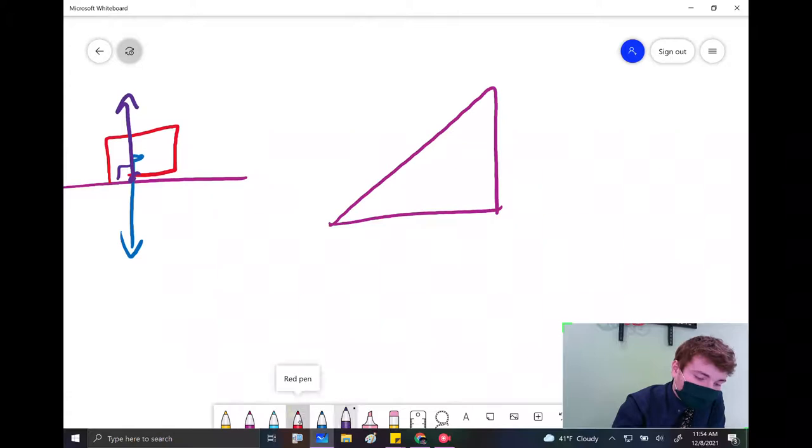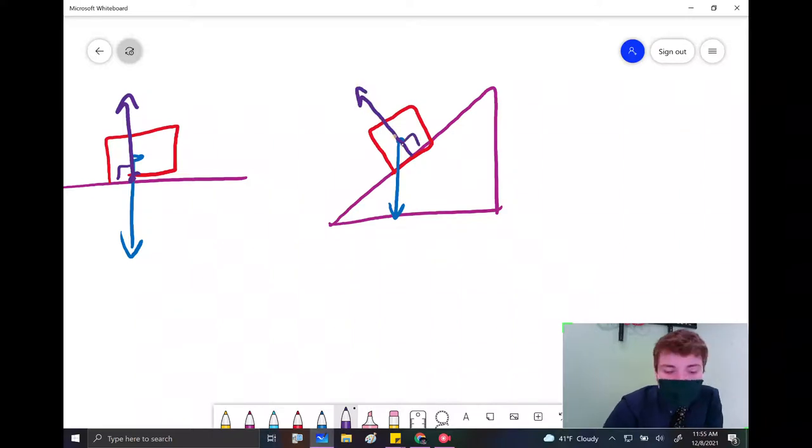All right, so for example, if we have a situation like this. We have a box on an incline. We know gravity is going straight down. And we know that the normal force, like I was just saying, has to make a 90 degree angle with the surface. So it needs to look like that.